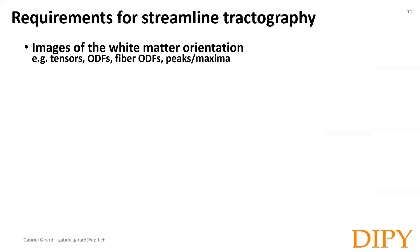What do we need to perform diffusion tractography? The first thing is an image describing the orientation of the white matter fibers in each voxel. These can be the diffusion tensors, the orientation distribution functions (ODFs), the fiber ODFs, or peaks. If you are not familiar with these objects, please watch the talk of Ari Aroca-Mora or the talk of Maxime Descoteaux on the topic.